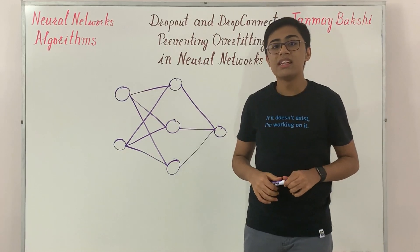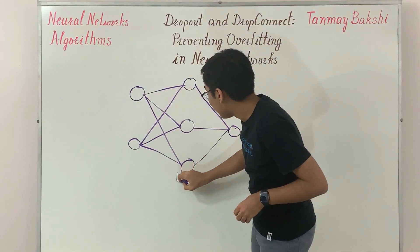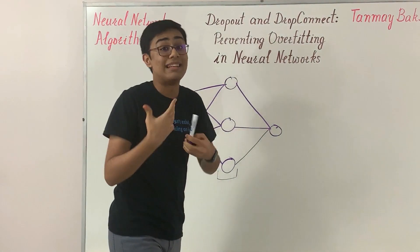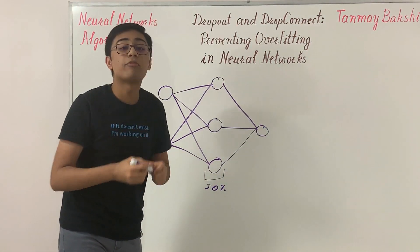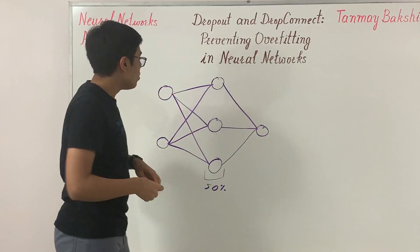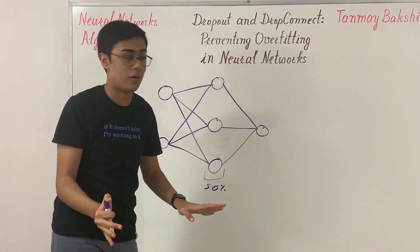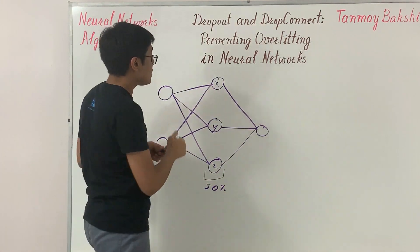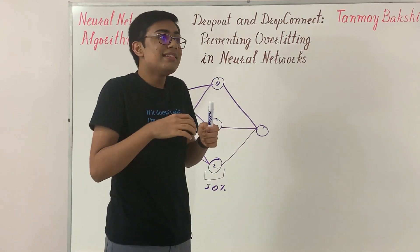The way dropout works is you drop out a few neurons at random to force the neural network to make new paths to learn the same knowledge. When you apply dropout to a layer, you assign a probability — say 50%, or 0.5. During forward propagation, each neuron in that layer has a 50% chance of having its value set to zero.